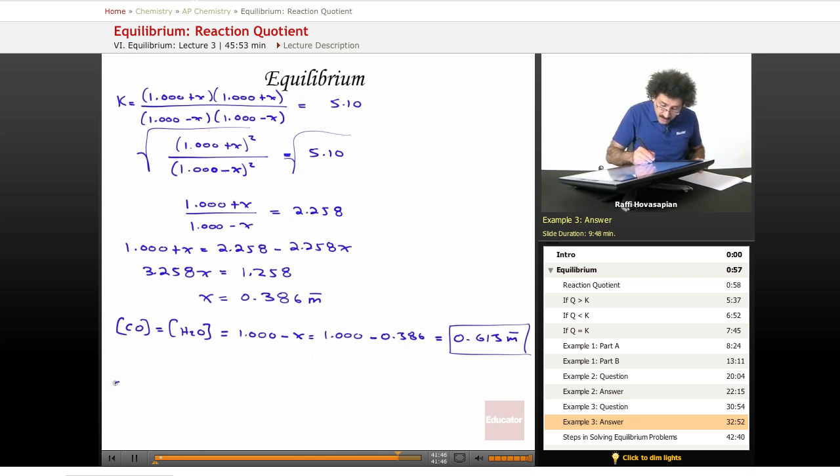Now the CO2 concentration, which also happens to equal the H2 concentration, equals 1.000 plus X equals 1.000 plus 0.386, 1.386 molarity.